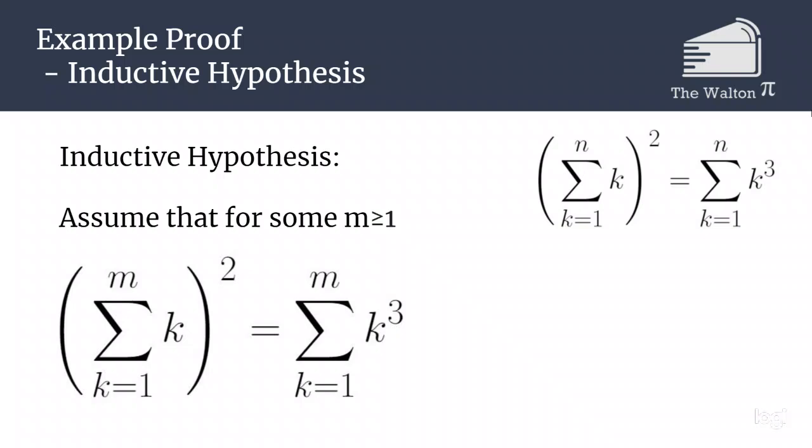Next we look at our inductive hypothesis. So we are going to assume that for some m greater than or equal to 1, the sum from k equals 1 to m of k all squared is equal to the sum from k equals 1 to m of k cubed.